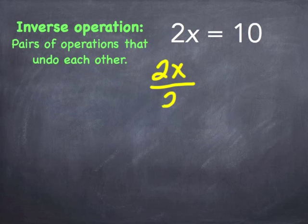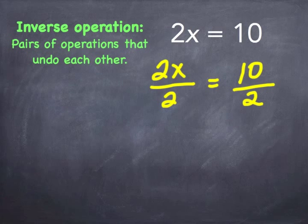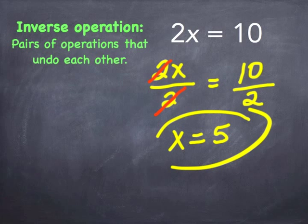Here we have a multiplication problem. We're going to need to divide, because the inverse operation of multiplication is division. I'll just divide both sides by two. This is going to cancel out the two on the left-hand side. I'll be left with just the variable X. And 10 divided by two is five.